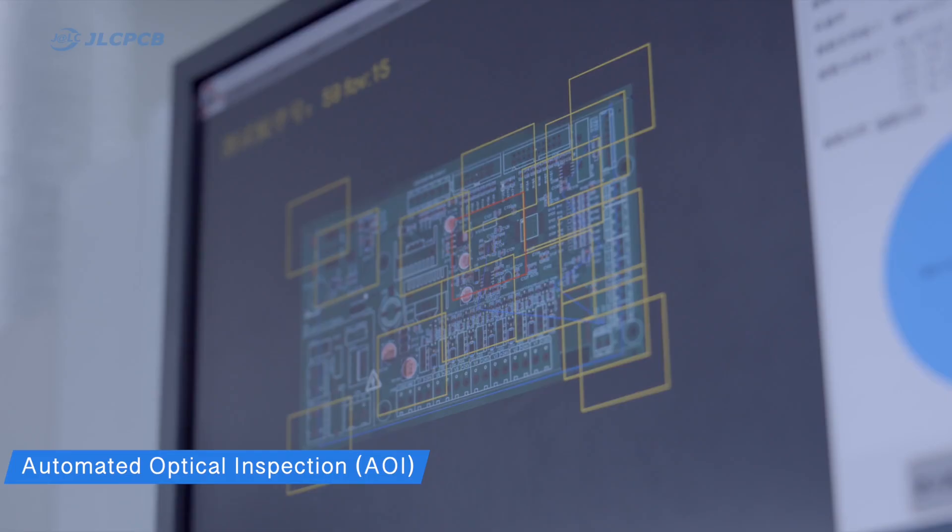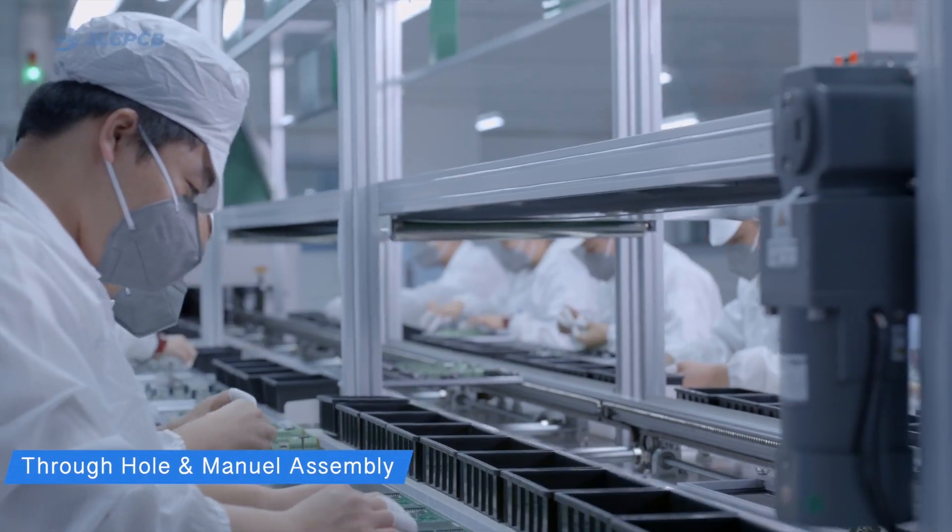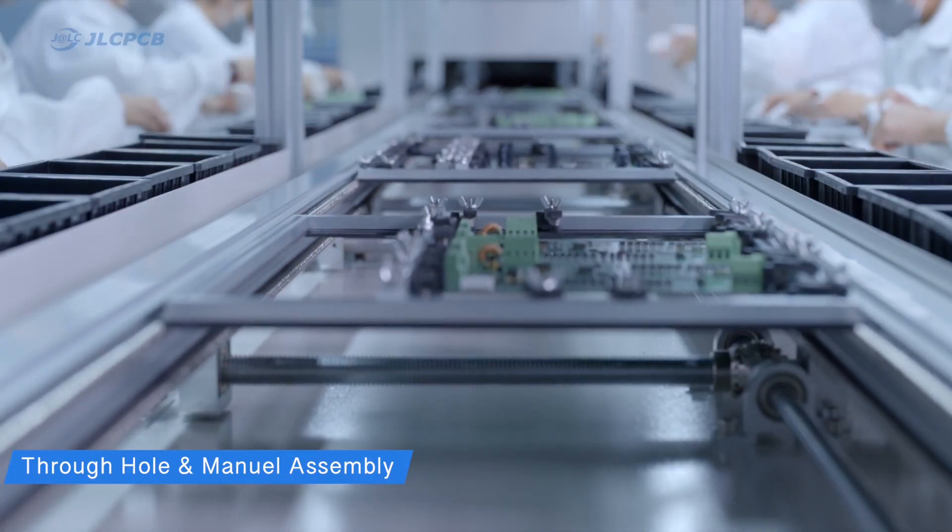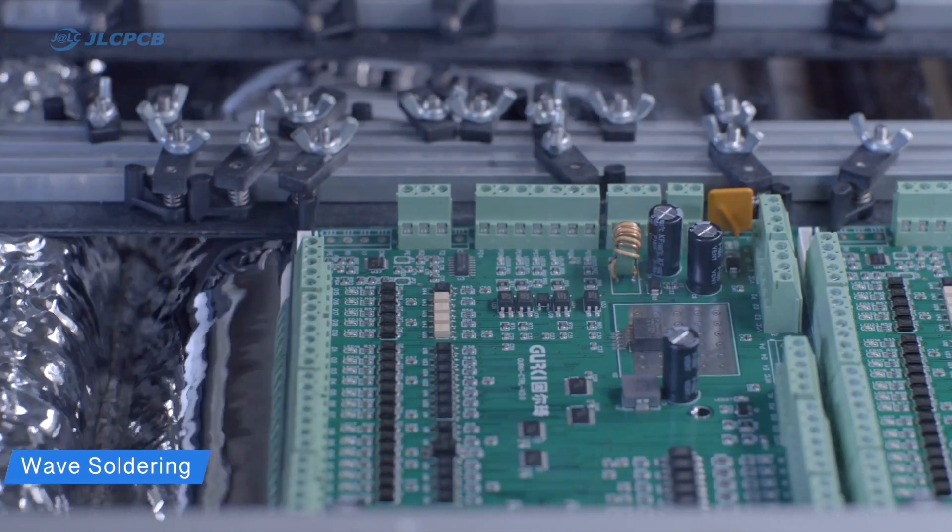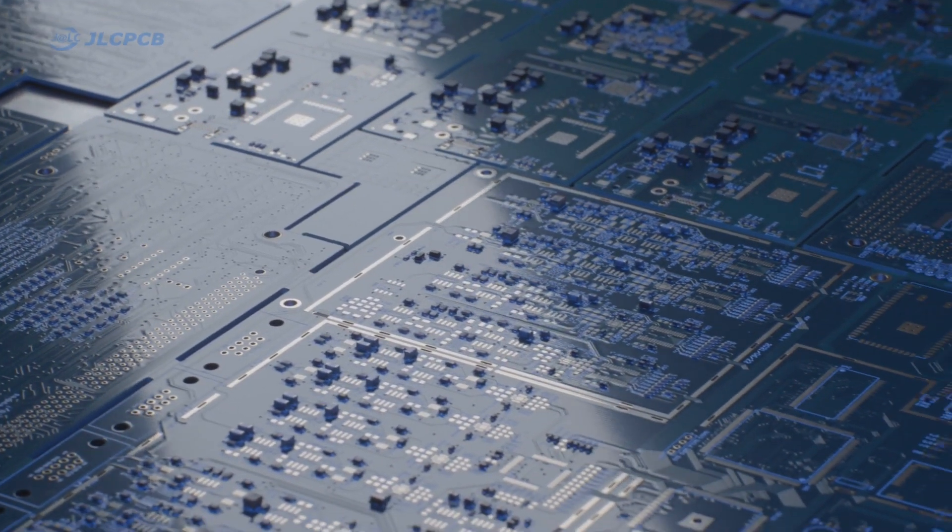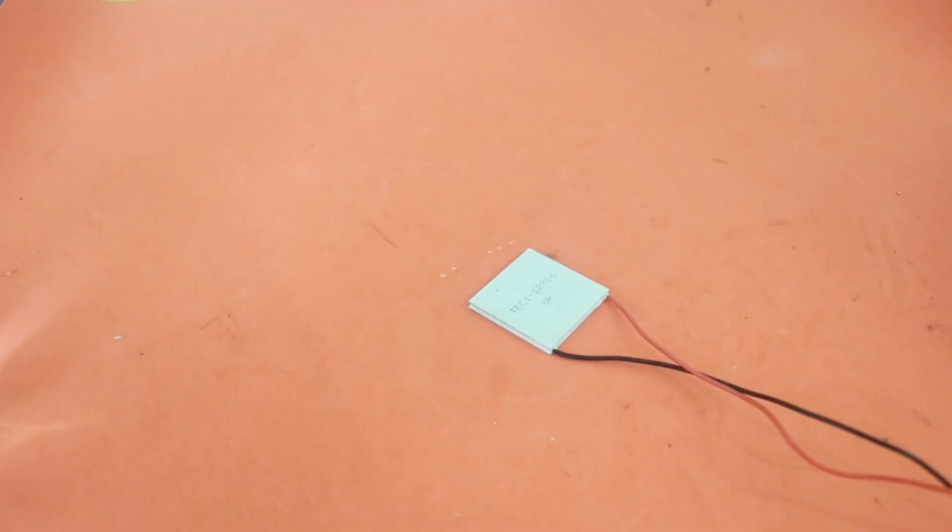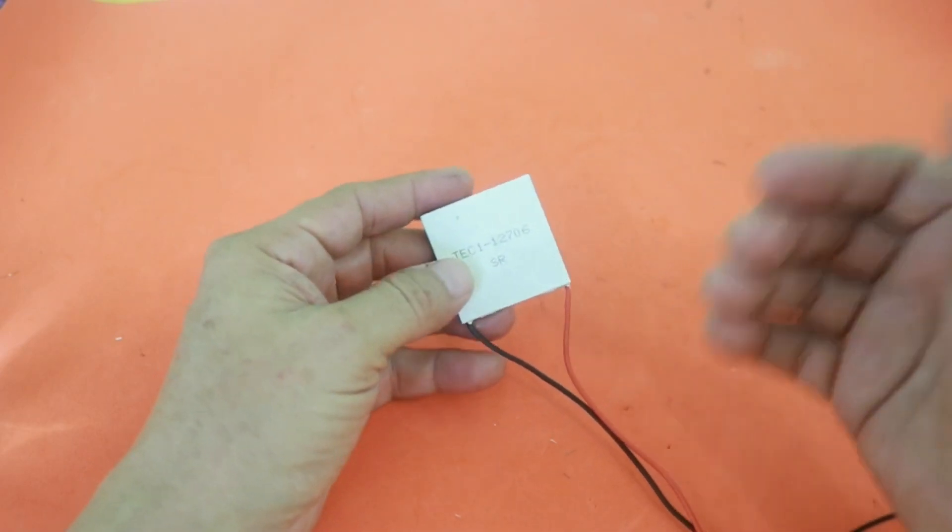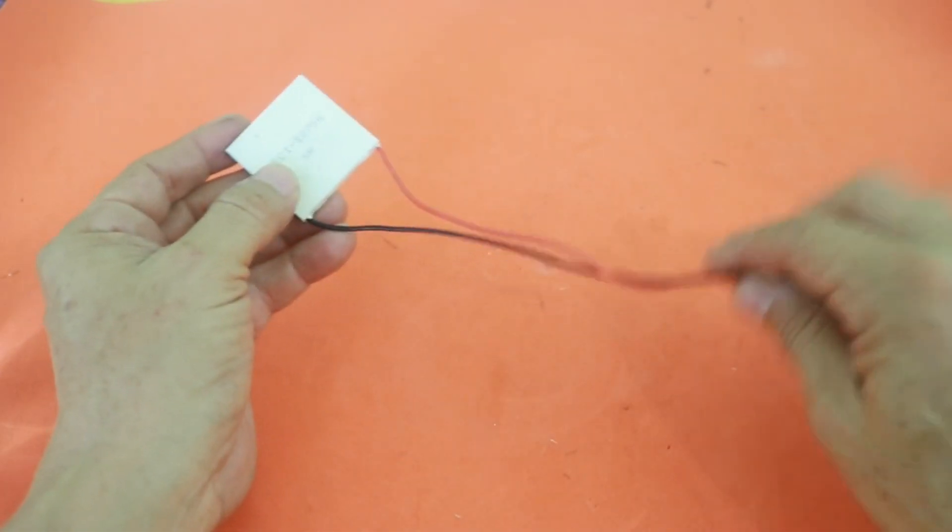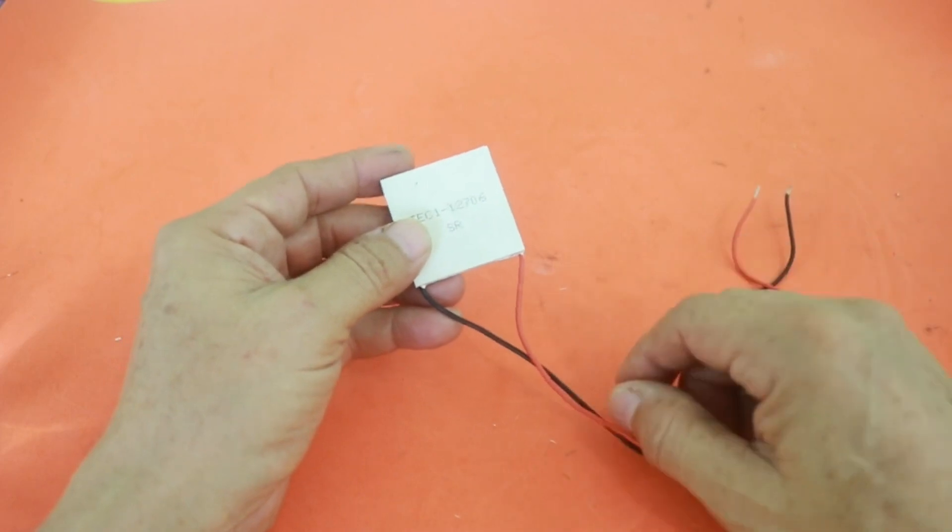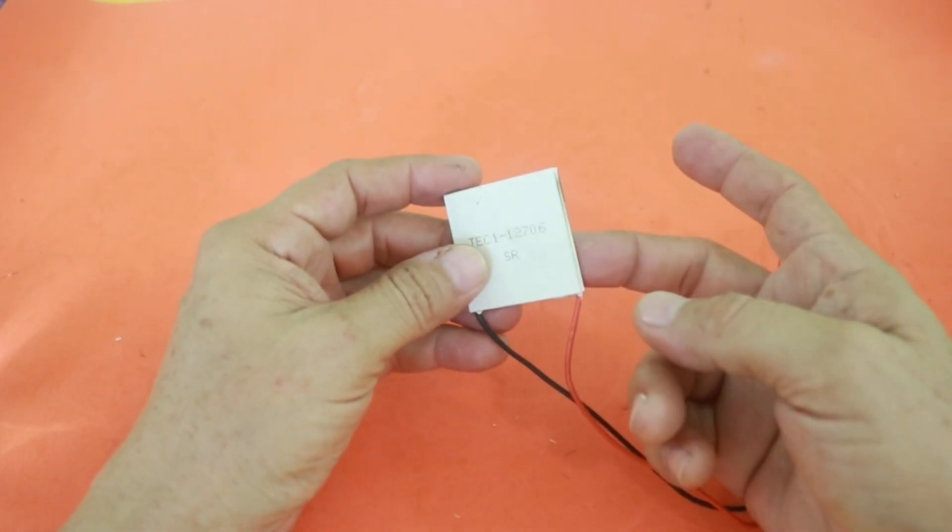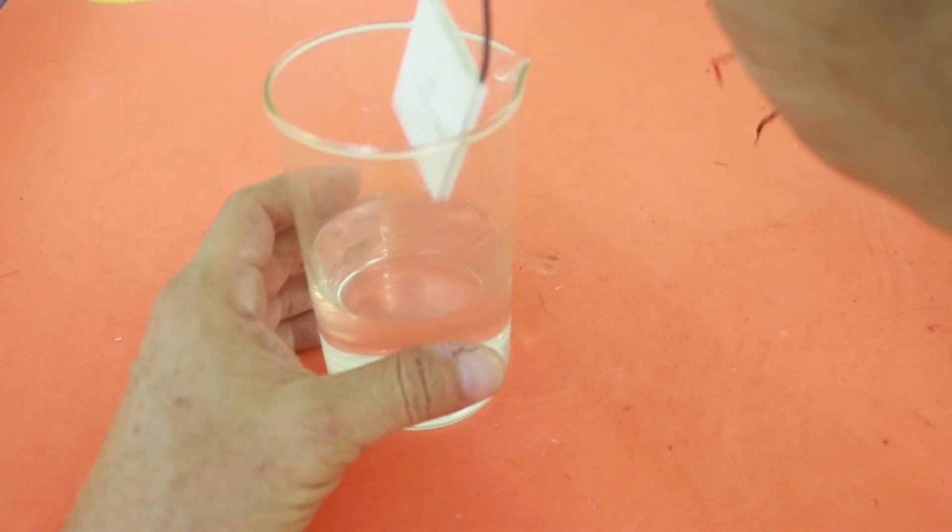So, let's get started. Now, I want to make a little experiment which consists in the following. We connect the cell to a power supply and one side will get hot and the other cold. What will happen if we submerge the cell in water?